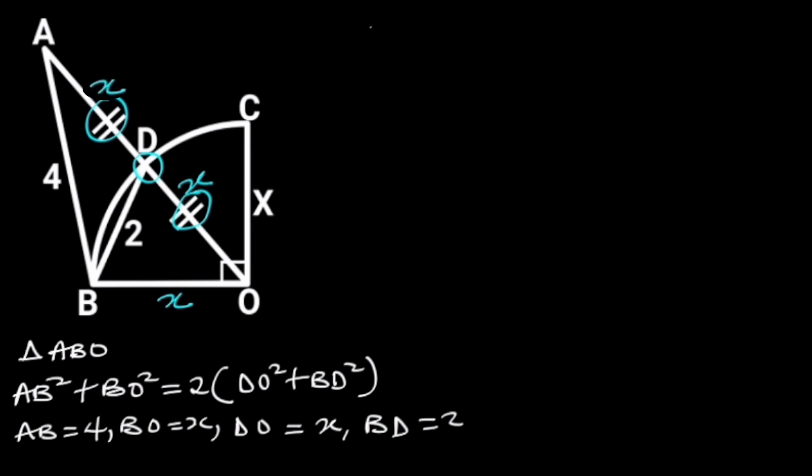Substituting these values in the equation will give us 4 squared plus X squared is equal to 2 times X squared plus 2 squared. Simplifying this will give us 16 plus X squared is equal to 2X squared plus 8.